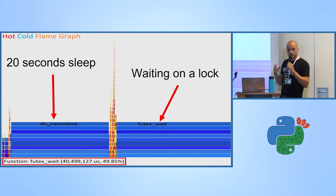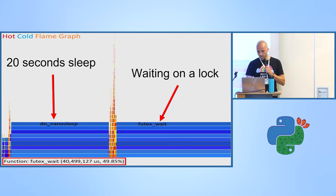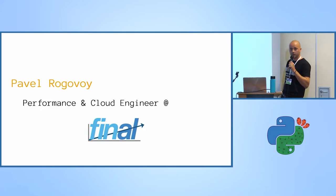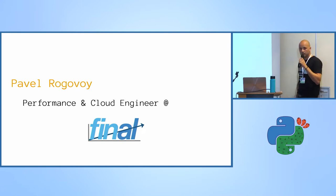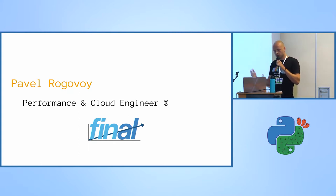Today I'm going to show you how you can root-cause analyze your applications using Python and eBPF technology. My name is Pavel and I'm a performance and cloud engineer at Final. Final is a world-leading high-frequency trading company — we develop trading algorithms and try to predict the market.